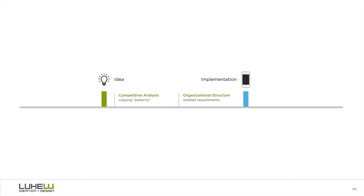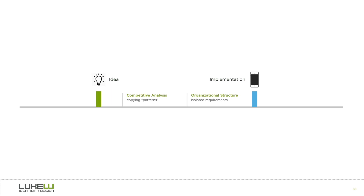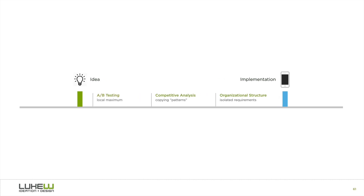When test results come back showing one item outperformed the other for a specific metric, it's pretty natural to want to implement that. So we make a product design choice because the data made us do it. Isn't this how we improve user experiences, by testing and seeing how user behavior improves? Yes, but it matters how you define and measure 'improves.'